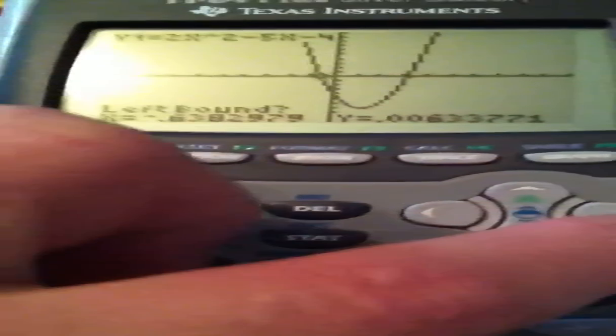So I draw, in my mind, I draw an imaginary vertical line running through that point. And when it says left bound, you are going to put the spider on the graph, or the dead bug, whatever you want to call it, the flashing cursor, you're going to put it on the graph to the left of that imaginary vertical line. And it's there now, so we hit enter.